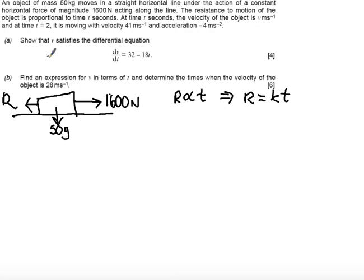Now it wants us to show this differential equation. Well, let's resolve horizontally in the direction of motion and acceleration. So we have 1,600 minus the resistance, which is kt, is equal to mass, which is 50, times the acceleration.